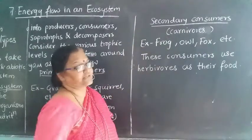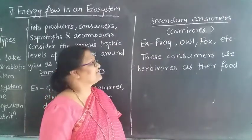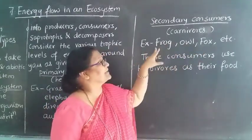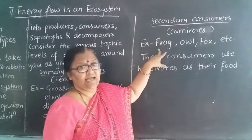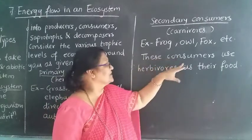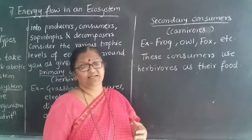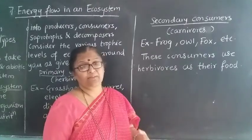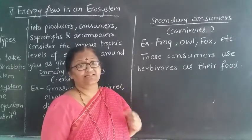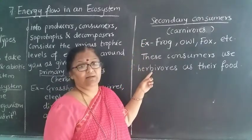Secondary consumers are nothing but carnivores. For example, frog, owl, fox — these are carnivorous animals. These consumers use the herbivores as their food, meaning they are eating the herbivorous animals. Those animals which are depending on grass or other plants are called herbivores, and these carnivores are depending upon the herbivorous animals.